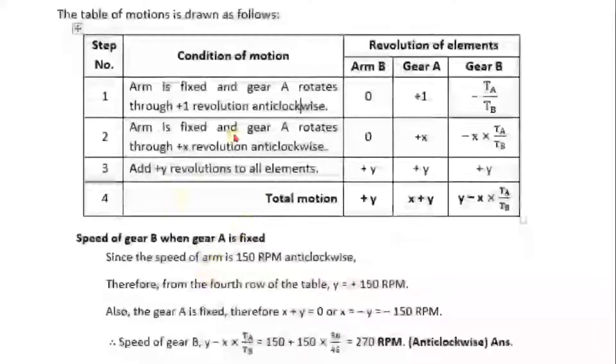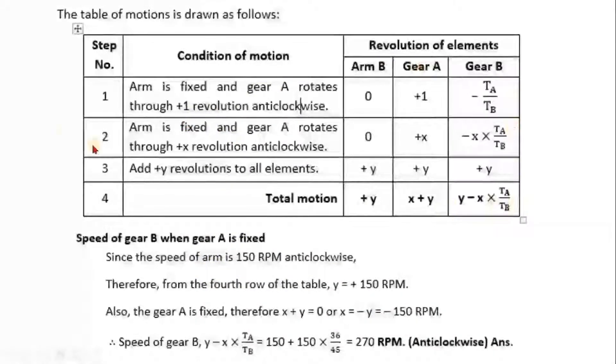So here we just draw the table with all those equations. So this is a simple epicyclic gear train. So here if you see the elements are arm B, gear A and gear B. Arm A is fixed and gear A rotates through +1 revolution anticlockwise.